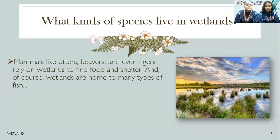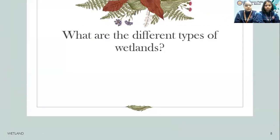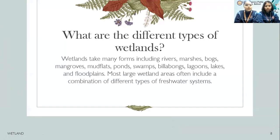Mammals like otters, beavers and even tigers rely on wetlands to find food and shelter. And of course, wetlands are home to many types of fish. Now let's see what are the different types of wetlands.